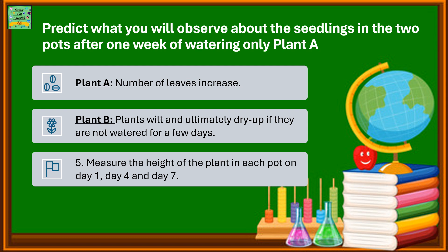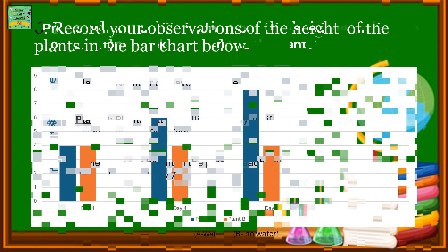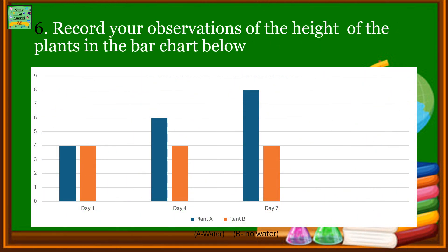Measure the height of the plant in each pot on day 1, day 4, and day 7. Record your observations of the height of the plants in the bar chart given below. The blue bar represents plant A and the orange colored bar represents plant B.